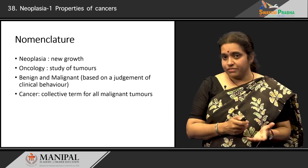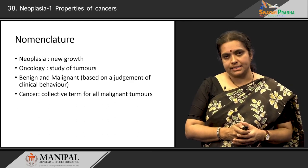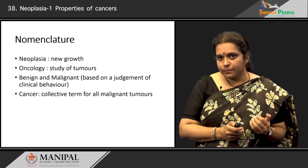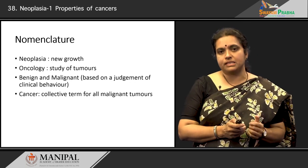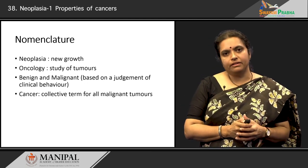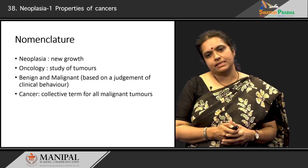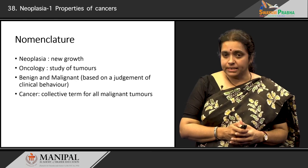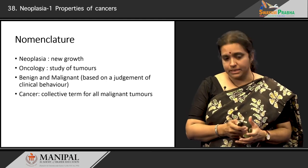The third terms everyone understands: benign and malignant. These words depend on how the cancers behave. Those that are localized, do not invade, and can be easily removed are known as benign — their behavior is benign. Those that grow beyond the confines of the organ, invade, and metastasise are known as malignant tumors. Finally, the word cancer is loosely used as a collective term for all malignant tumors, whatever type it is.